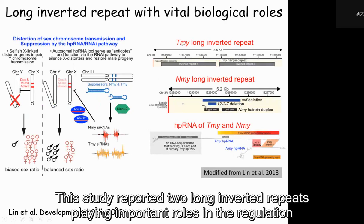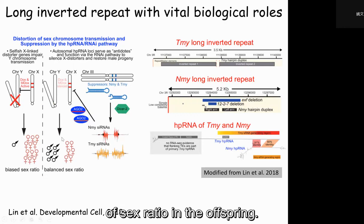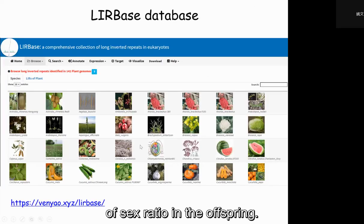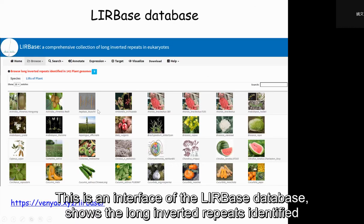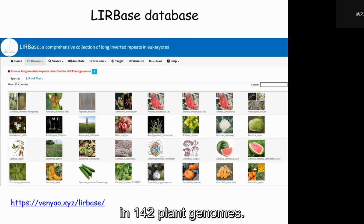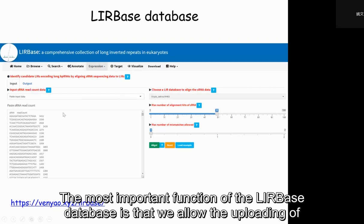This study reported two non-invalid repeats that played important roles in the regulation of sex ratio in the offspring. We then identified the non-invalid repeats in the genomes of more than 400 plants and animals. This is an interface of the database showing the non-invalid repeats identified in plant genomes.